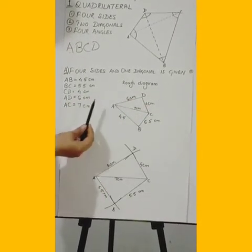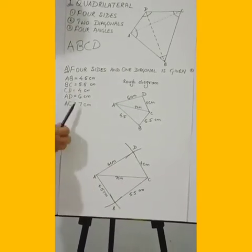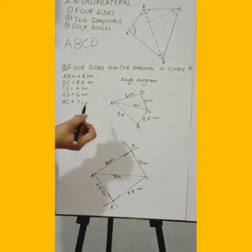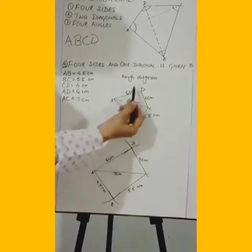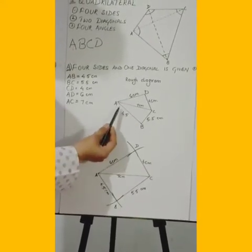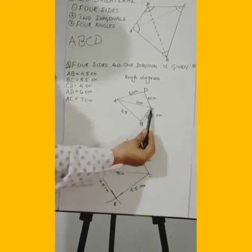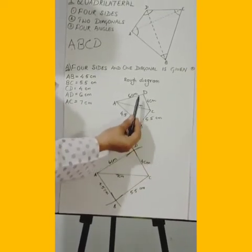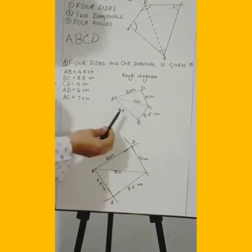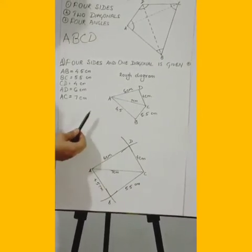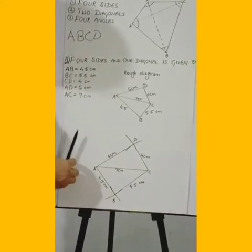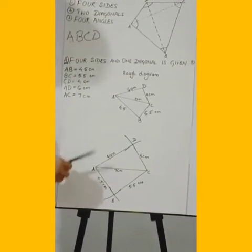To construct this quadrilateral, we first need to draw a rough figure. Draw a rough figure of quadrilateral ABCD and write all the dimensions on it — AB, BC, CD, AD, and AC. This helps us clearly see what parameters and dimensions are given for the construction.